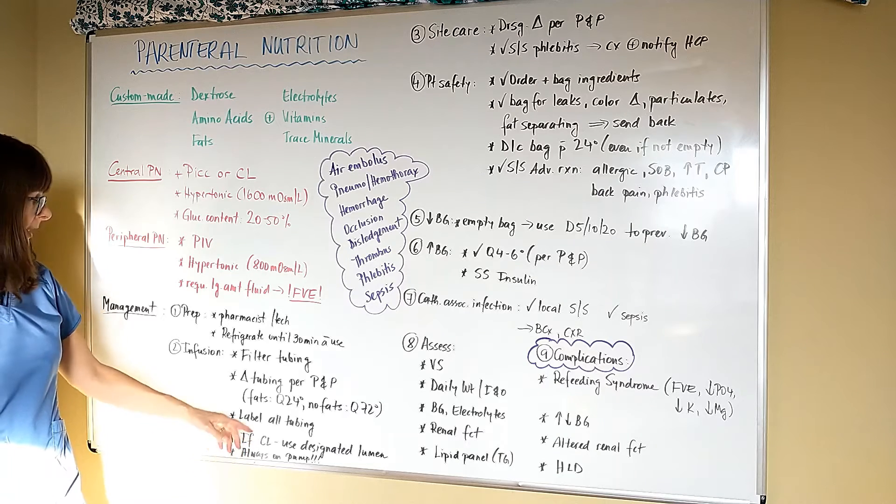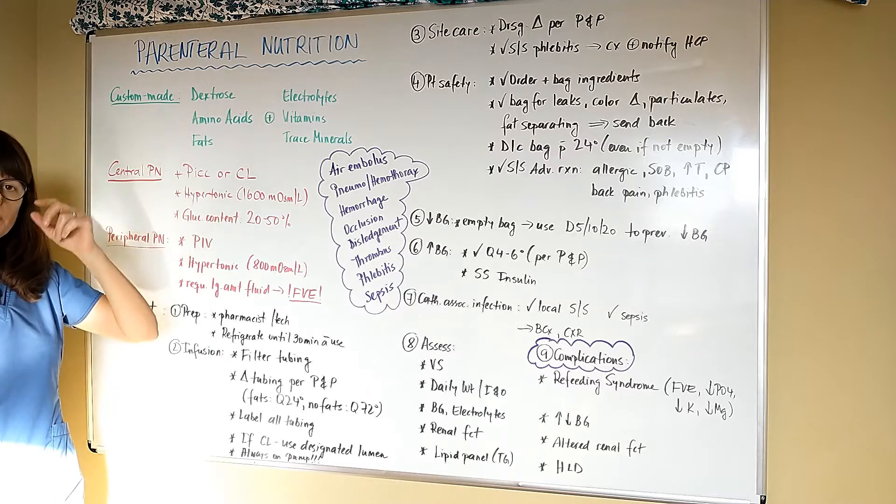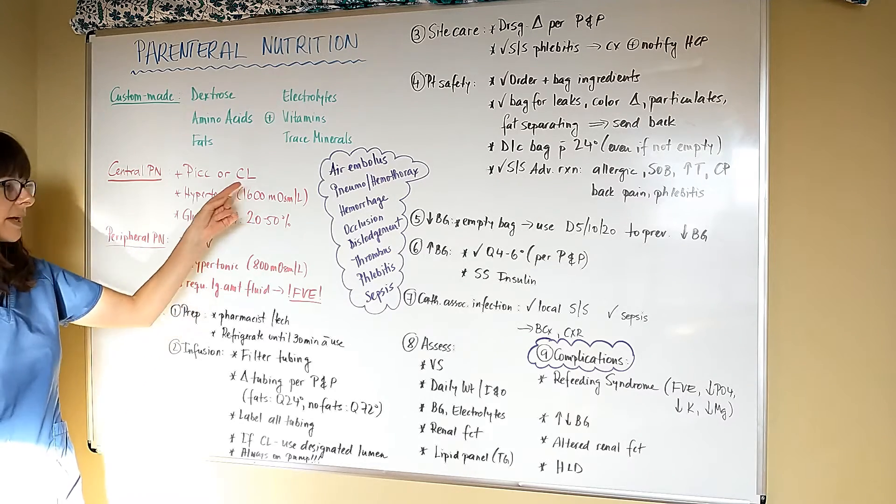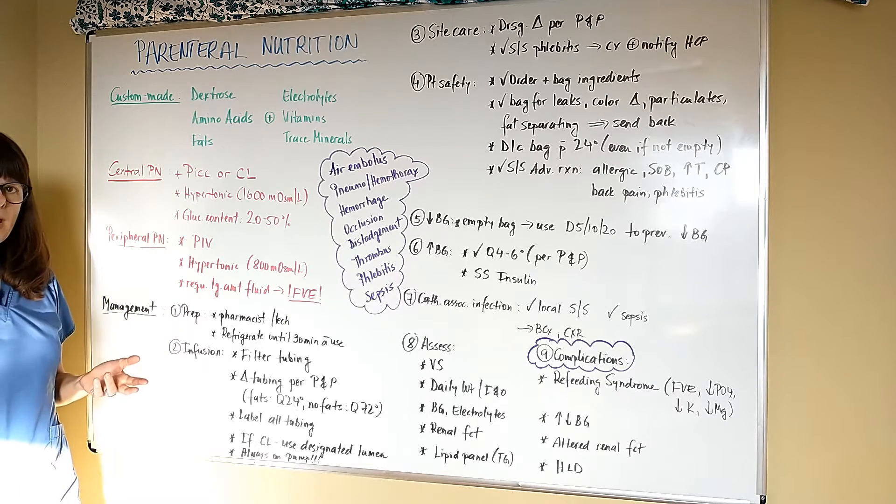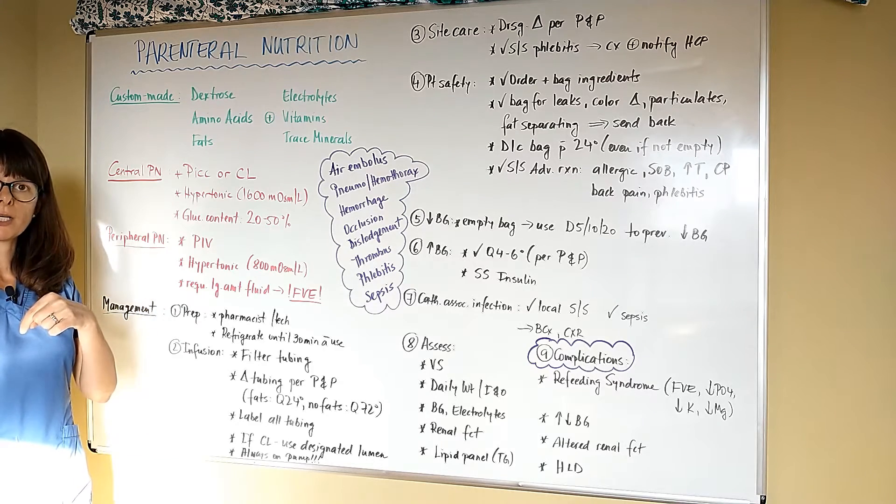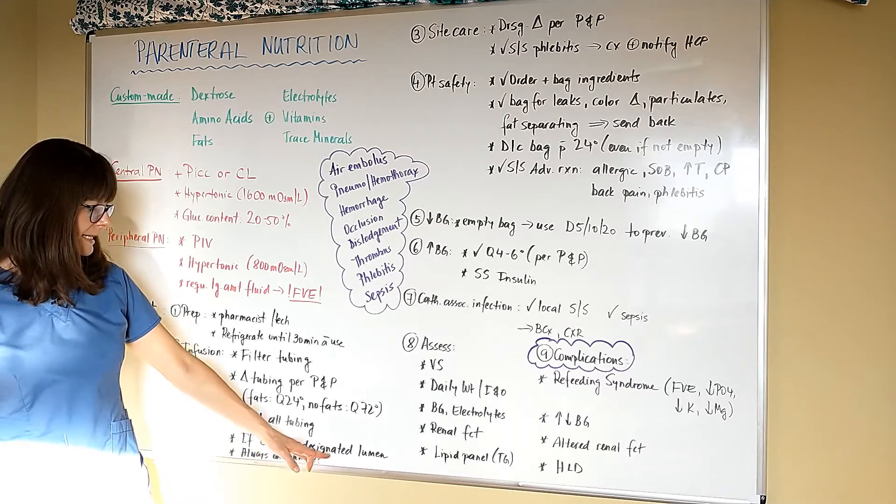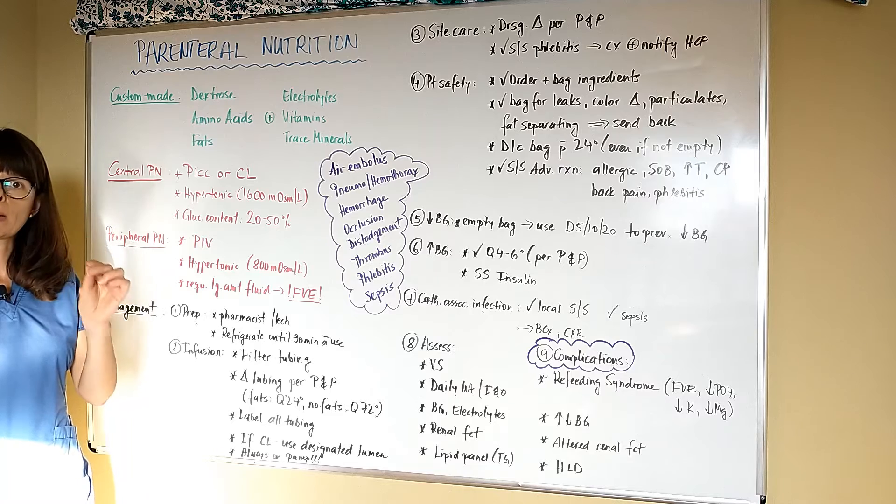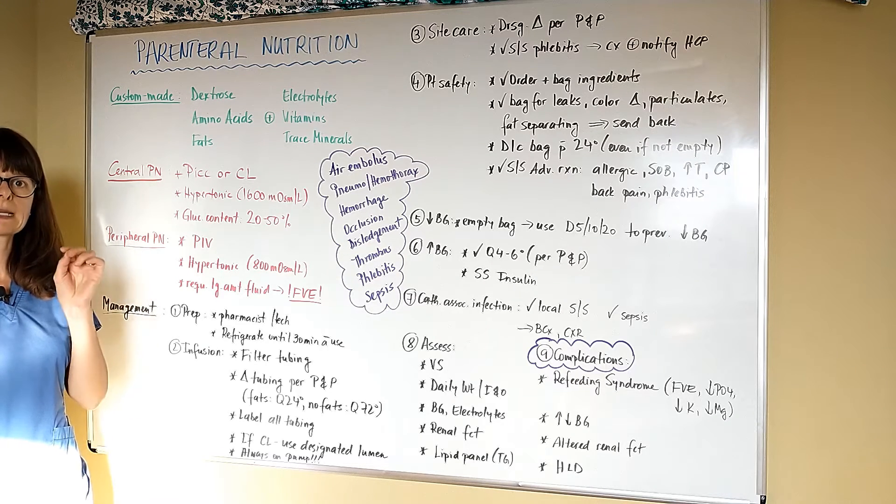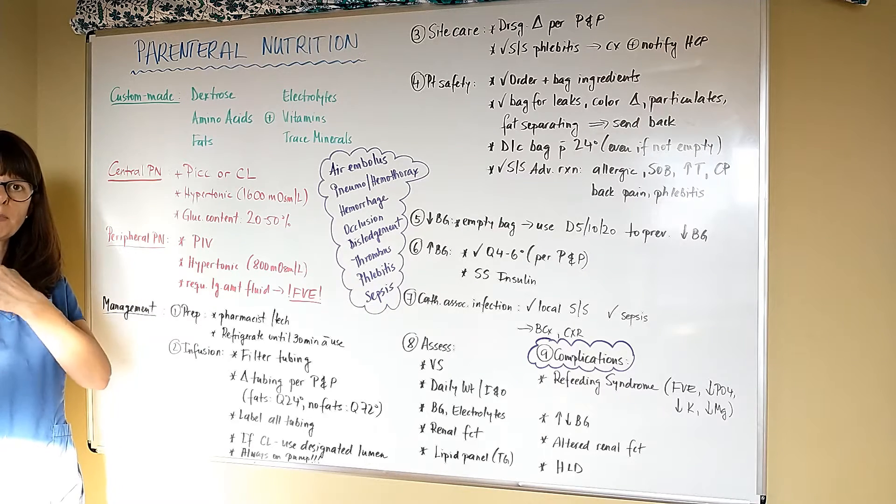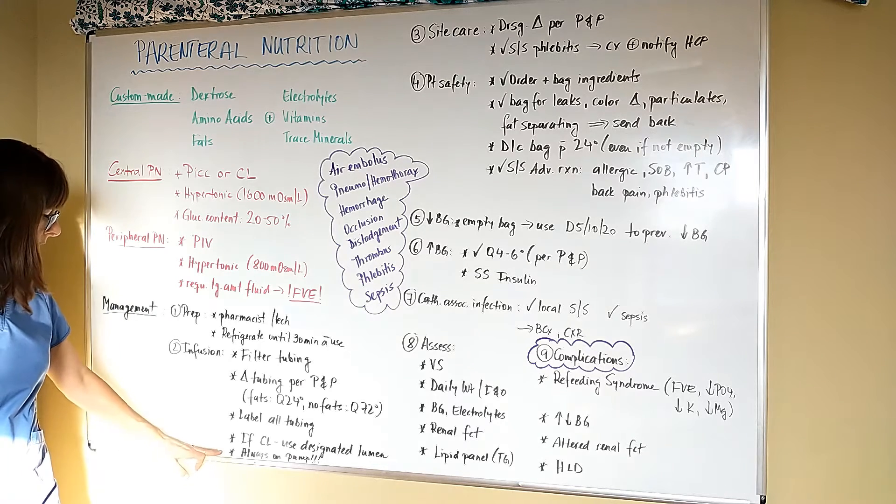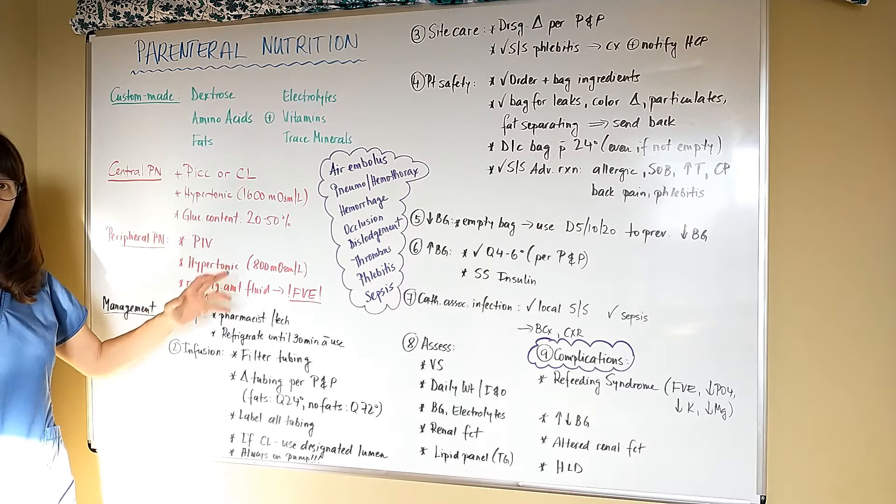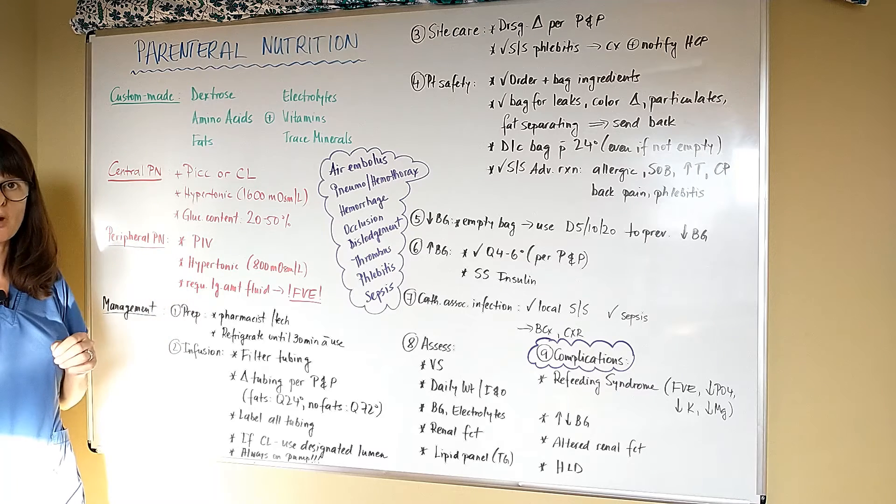If it is administered through a central line, whether that's a PICC or a triple lumen, there will always be more than one lumen. Typically a PICC line has two lumens, and the central line typically has three. That's why it's also called a triple lumen central line. That means there's three ports that you can hook up different IV lines. If it is a central line, always use a designated lumen for the nutrition. That way you can keep it separate. You're not going to inadvertently hook up antibiotics or any other solutions to this designated nutrition line. You can certainly label that on the patient's side of the port or of the central line as well. Always have it on an IV pump for regulation because we're administering hypertonic solutions. We want to make sure that the pump controls the flow rate rather than guesstimating the drops.